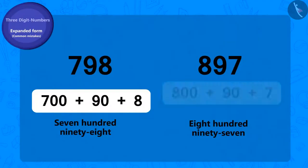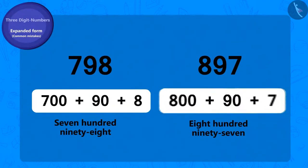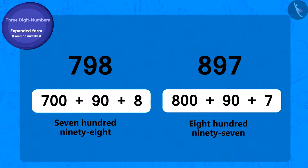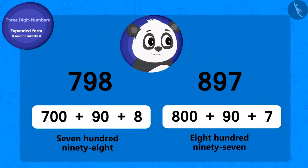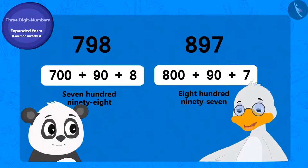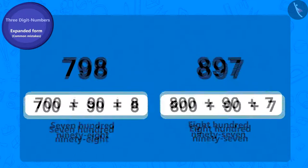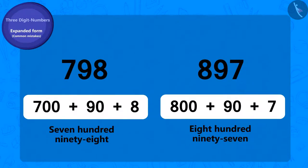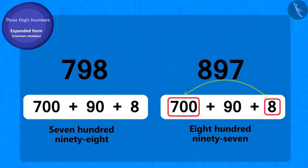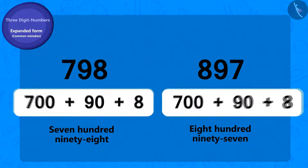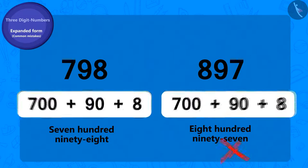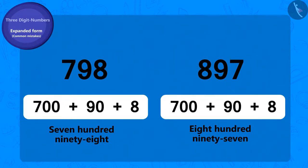We can see that the expanded form of both numbers is different. That's why Golu's answer is incorrect. Uncle said: you will not get the toffee, Golu, your answer is wrong. While writing the expanded form, you exchanged the places of hundreds and ones. Therefore both expanded forms seemed the same to you, although in reality the expanded form of these two numbers is different.